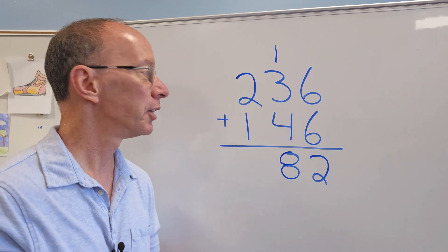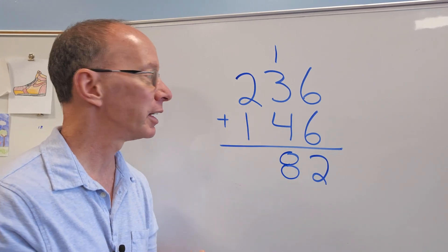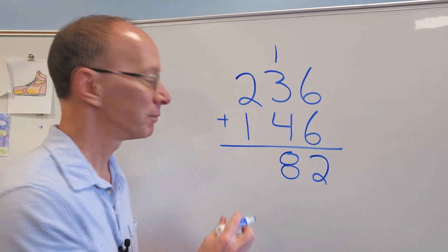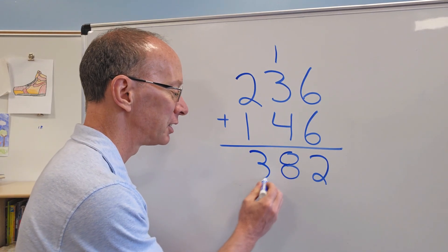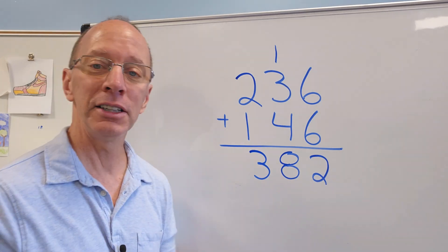All right, now I add the hundreds. This is the hundreds place right here. So two plus one? Three. You guys are math ninjas, aren't you? And there's our answer, 382.